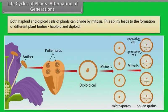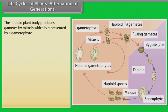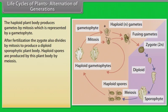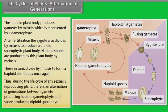Both haploid and diploid cells of plants can divide by mitosis. This ability leads to the formation of different plant bodies, haploid and diploid. The haploid plant body produces gametes by mitosis, which is represented by gametophyte. After fertilization the zygote also divides by mitosis to produce a diploid sporophytic plant body. Haploid spores are produced by this plant body by meiosis. These in turn divide by mitosis to form a haploid plant body once again. Thus during the life cycle of any sexually reproducing plant there is an alternation of generations between gamete producing haploid gametophyte and spore producing diploid sporophyte.